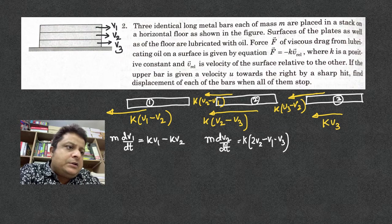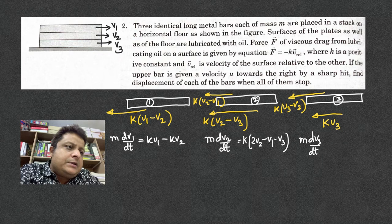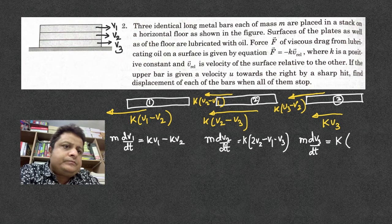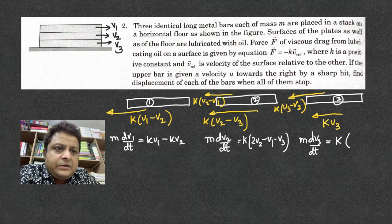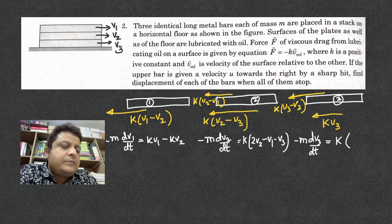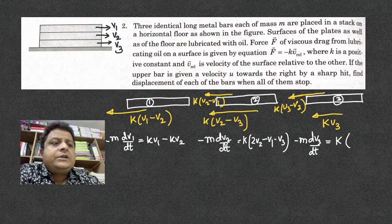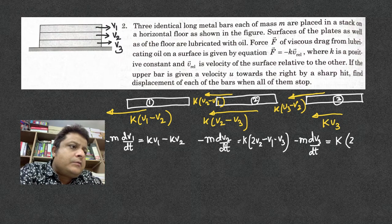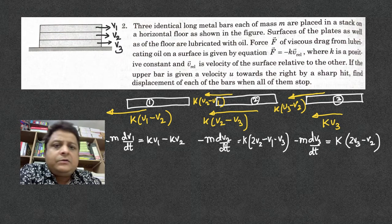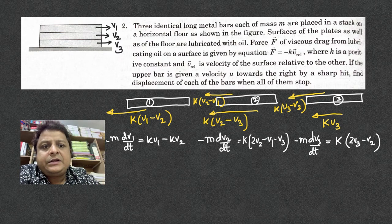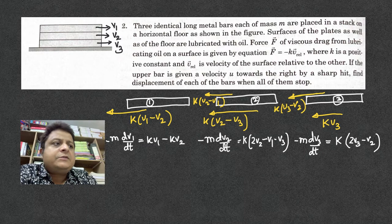And on bar 3, we can write m dv3/dt = k into... there will be a minus sign. Minus sign will be there. So it's k into 2v3 - v2. So you have 2v3 - v2. Do not forget the minus sign. Minus sign because velocity is decreasing. Actually the viscous force is in opposite direction, that means negative direction of x-axis, towards the left. That is why this minus sign.